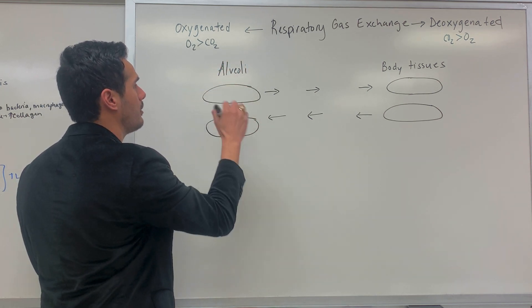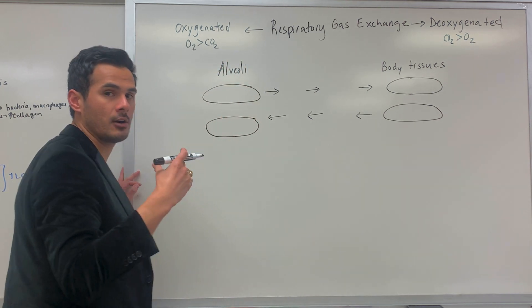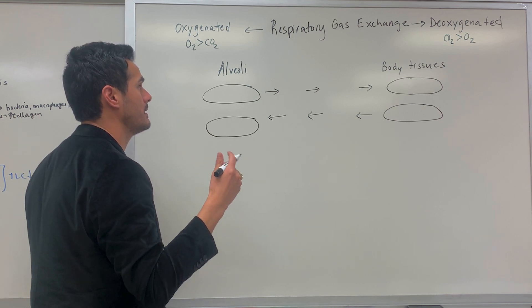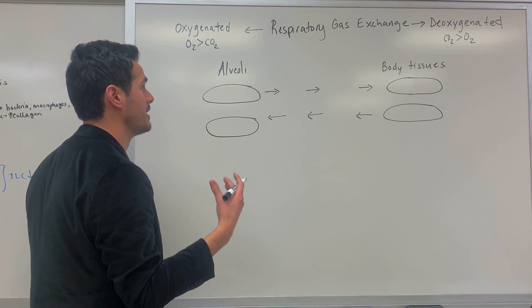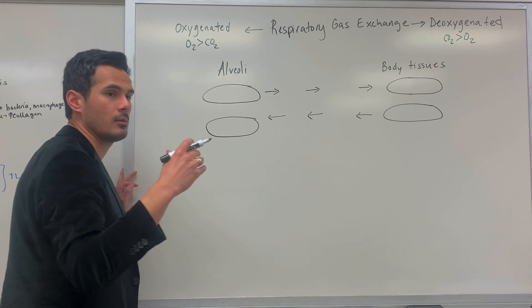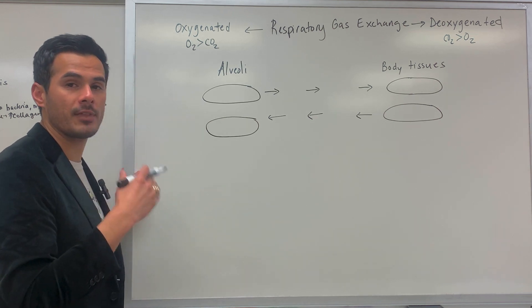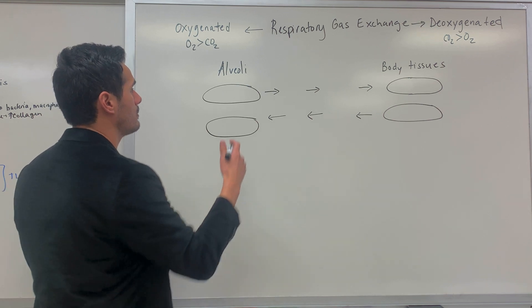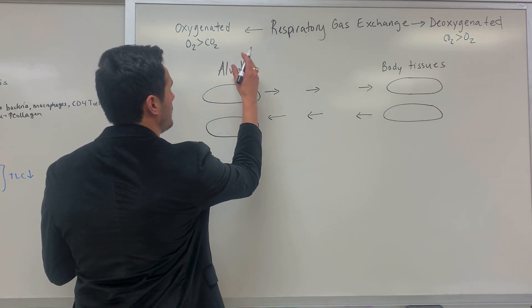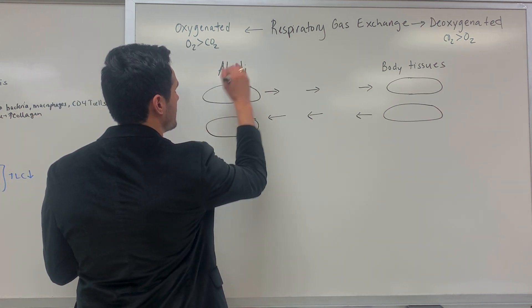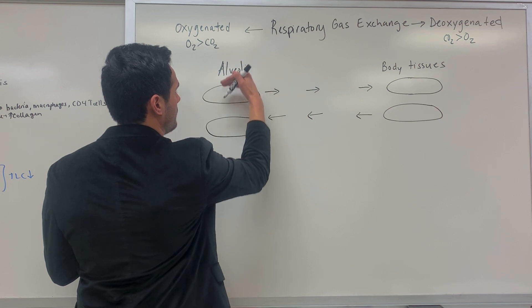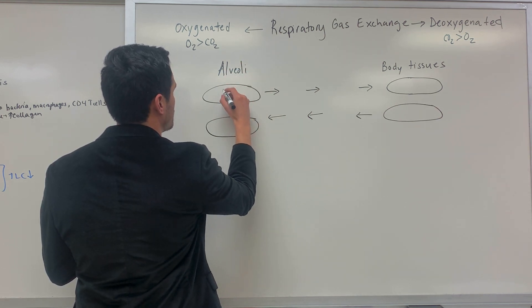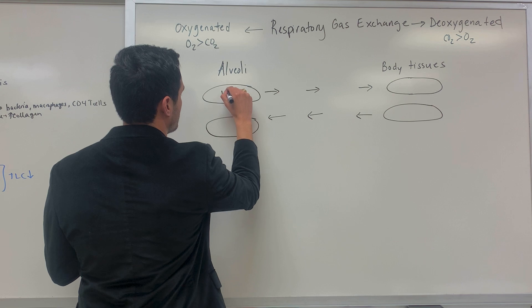We've already discussed how within the alveoli there are capillaries, and at the capillary this is where gas exchange occurs — we're dropping off oxygen and picking up carbon dioxide. Oxygen will diffuse here, get into the red blood cell, and it's transported with the use of hemoglobin.